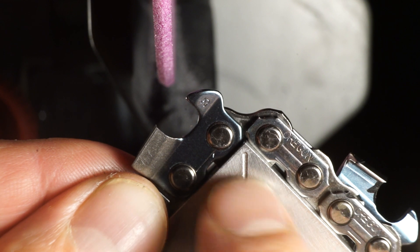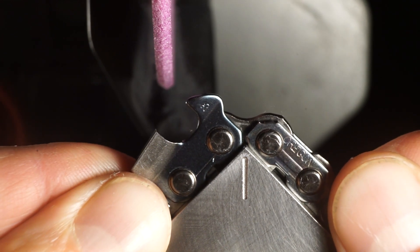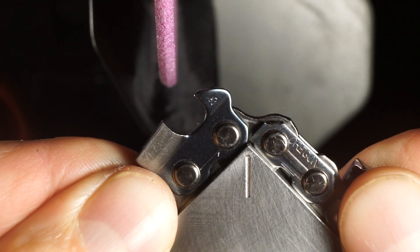To set tooth length, first make sure your rivets are level and your witness mark is in the center of your two rivets.